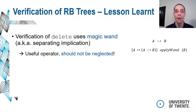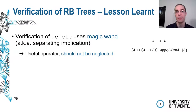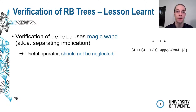One lesson learned during verification is the importance of the magic wand operator, also called separating implication. This is the dual to the separating conjunct: while the separating conjunct splits into two disjoint heaps, the magic wand allows us to merge them back together. If we have A wand B, we can combine that with A and obtain B. We use this in the verification of the delete operation, which shows the operator is useful in real-world cases. Unfortunately, several tools do not support this operator or only support it in a limited way — so to all tool developers, please include support for the magic wand operator.